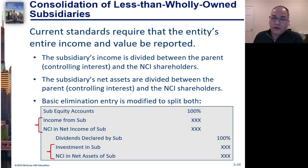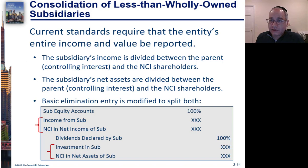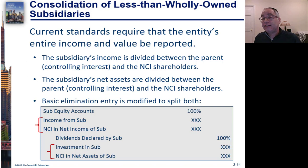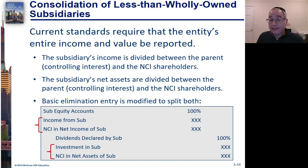The standards require that the entire income and value be reported, including both the parent's share of the subsidiary and the non-controlling interest's share of the subsidiary. That means the net assets of the subsidiary need to be divided between the parent's share and the non-controlling interest's share.